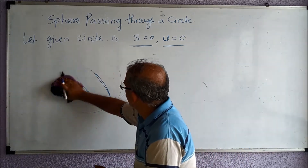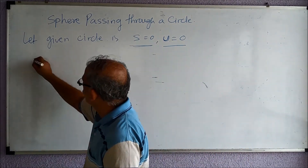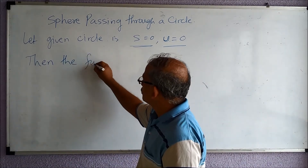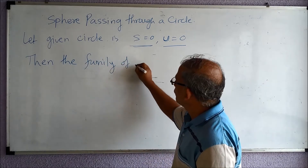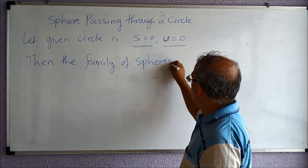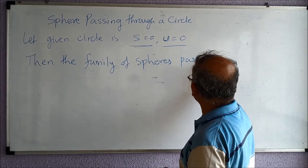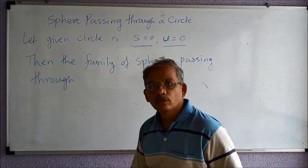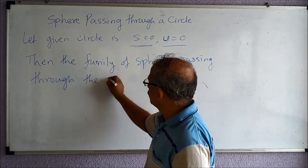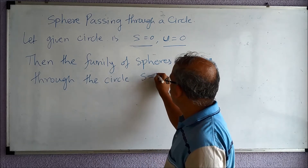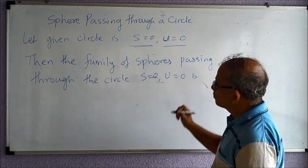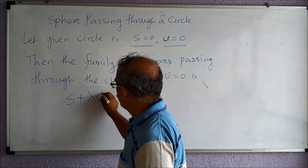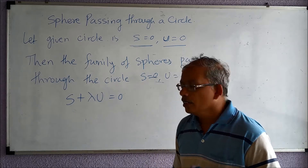The family of spheres passing through the circle S equal to zero, U equal to zero is given by the equation S plus lambda U equal to zero, where lambda is a constant.